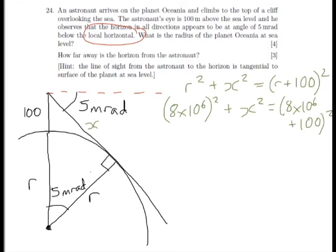So this becomes 64 times 10 to the power of 12 plus X squared equals, we can expand out these brackets again, we get 64 times 10 to the power of 12 plus 8 times 10 to the 8, so that's 8 times 10 to the 6 times 100, and that again, plus 8 times 10 to the 8 plus 100 squared, which is 10,000.